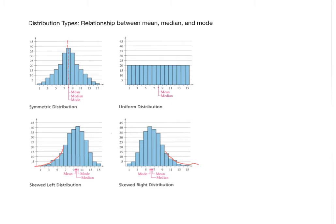Why compute mean, median, and mode? Mode is fairly clear — people want to know what's most popular or shows up most often. In the symmetric distribution, the mode is the value of the tallest bar, which is 8. In the skewed left distribution, the mode is 10, and in the skewed right, it's 6. For the uniform distribution, mode is not mentioned because all data values have the same frequency, so there is no mode.